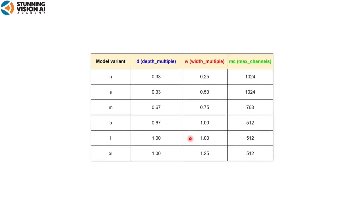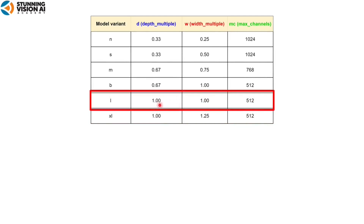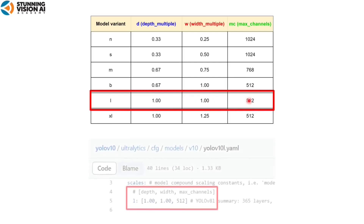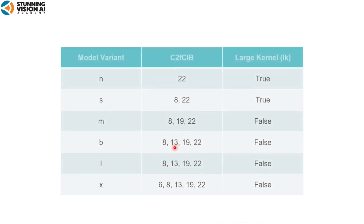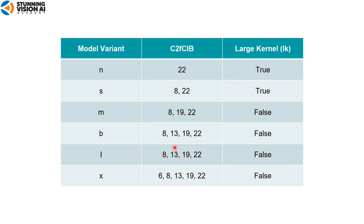To determine the YOLO V10 variant, there are three parameters: depth multiple, width multiple, and max channels. The depth multiple determines how many bottleneck blocks are in the C2F block and how many CIB blocks are in the C2FCIB block. Width multiple and max channels determine the output channel. For example, the L variant has depth multiple 1, width multiple 1, and max channels 512. Each variant also differs in its use of the C2FCIB block: in the N variant it's used on block 22; in S variant on blocks 8 and 22 with LK equals true; in M to X variants it's used on different block numbers without large kernel convolution.